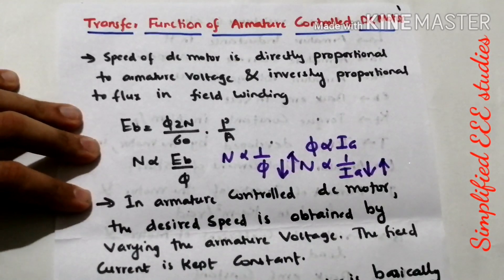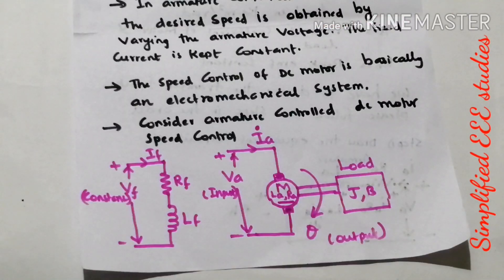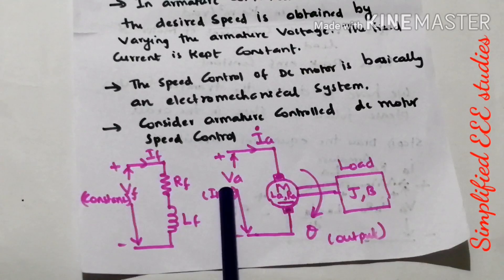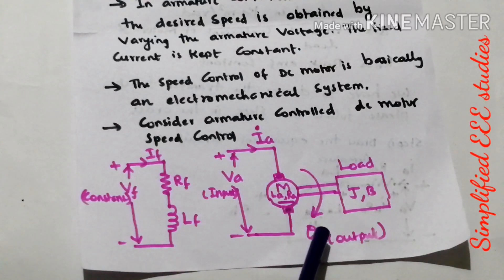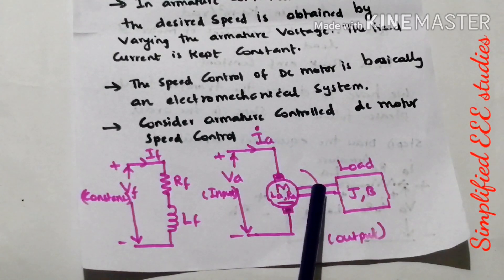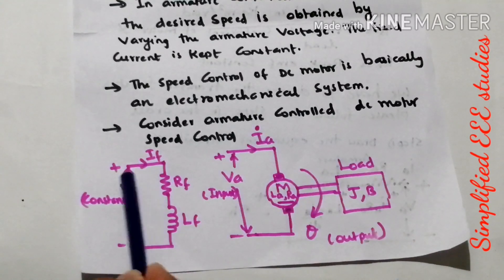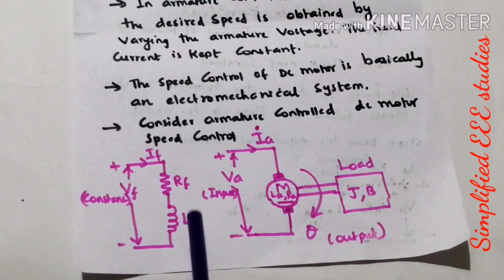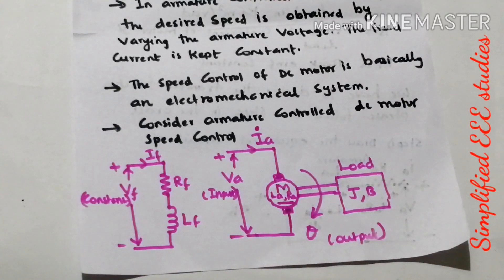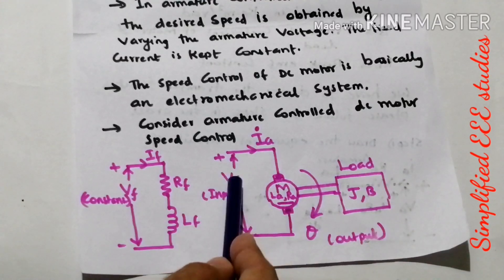Now let us consider the motor. As we can see, this is the entire block diagram of armature control DC motor. Here VA is the input — that means armature voltage is the input and theta is the output. Theta is the rotation. The armature is directly connected with the load through the shaft, as you can directly observe here. In this segment we can see that the field is kept constant. RF and LF represent the field resistance as well as field inductance, and in this case we will be keeping this field part constant, where the armature part will be varying — armature voltage is getting varied.